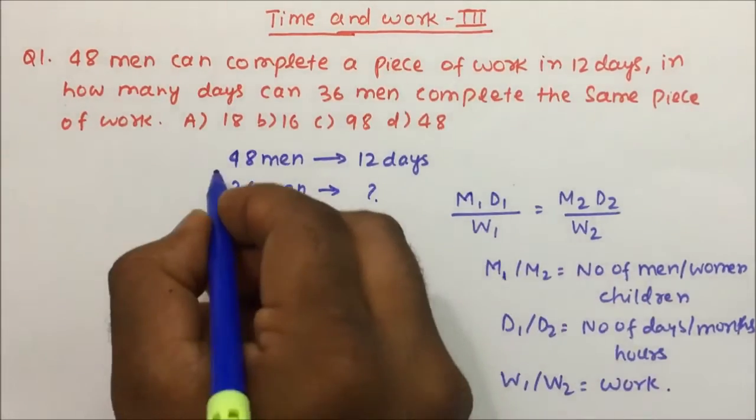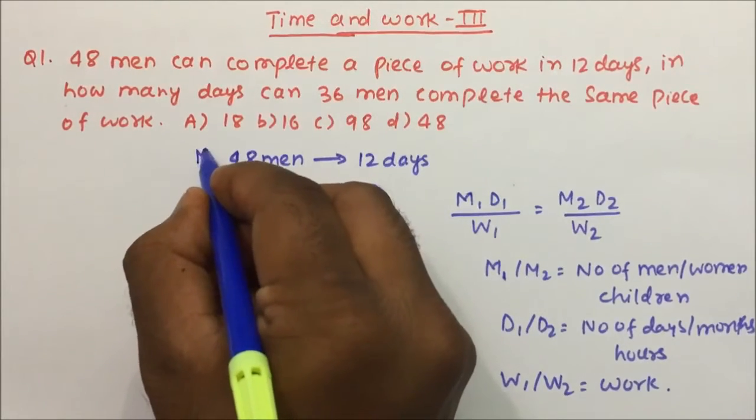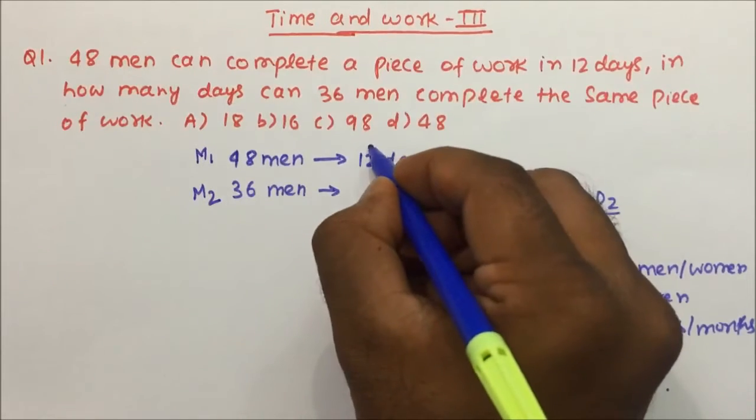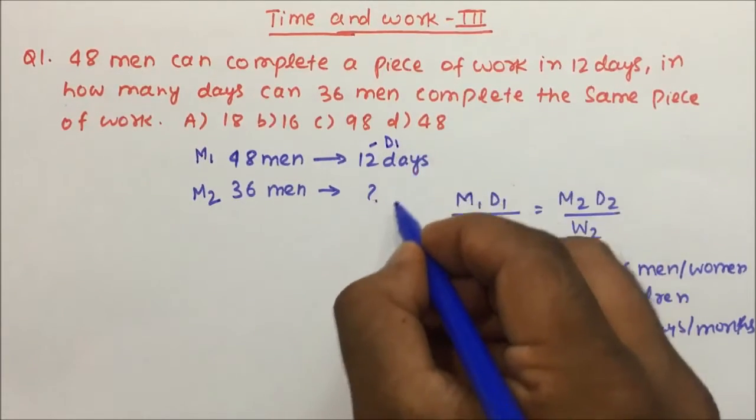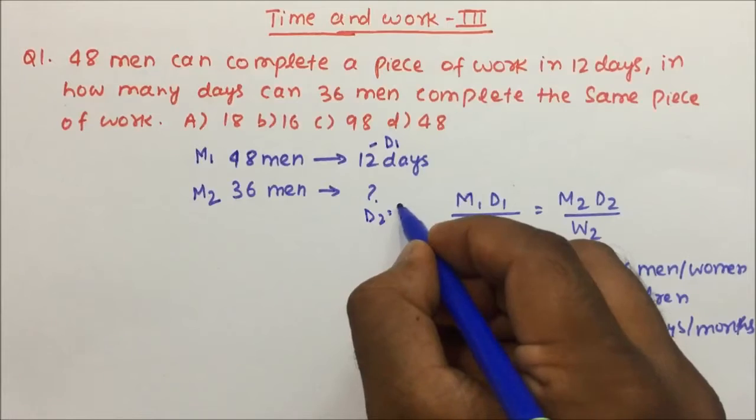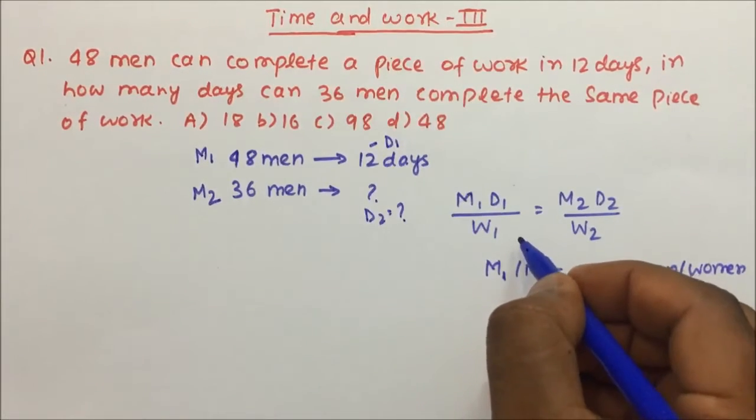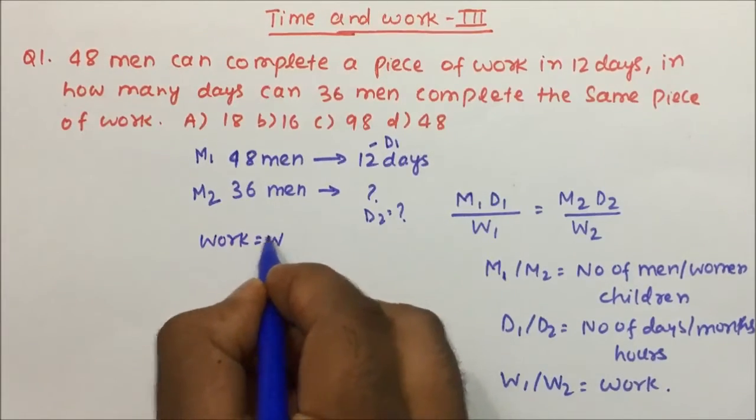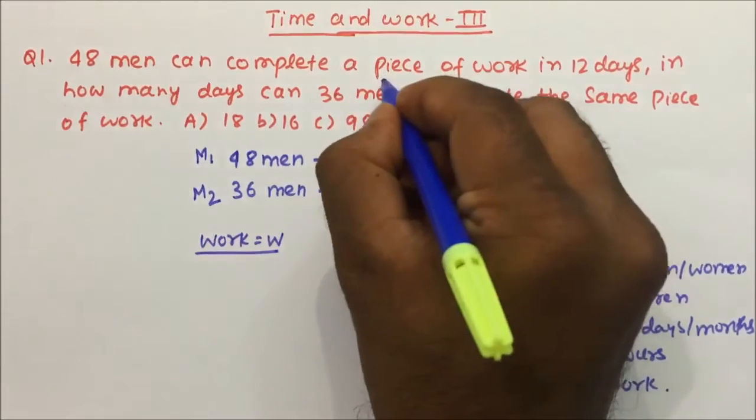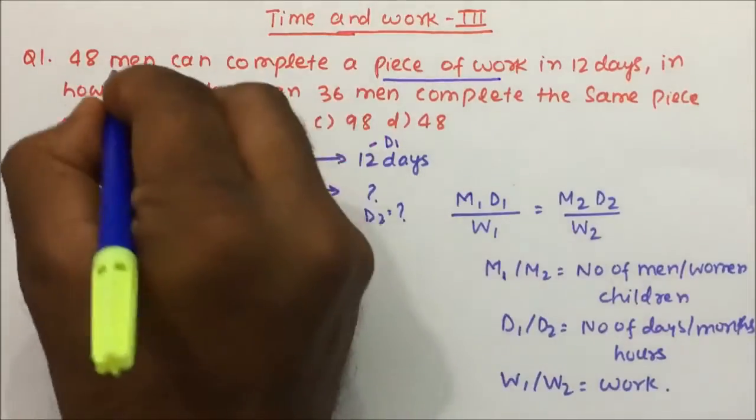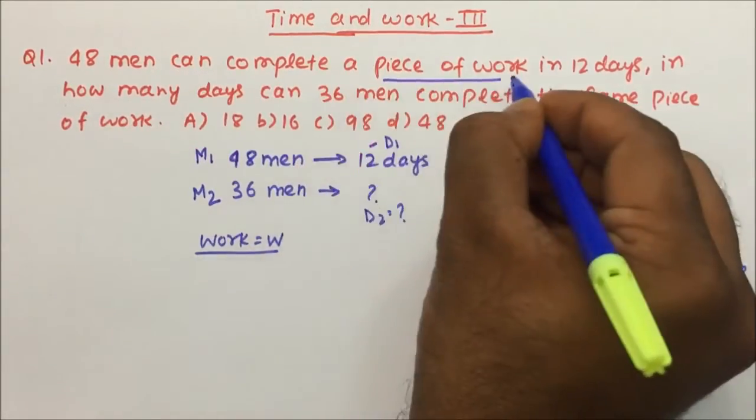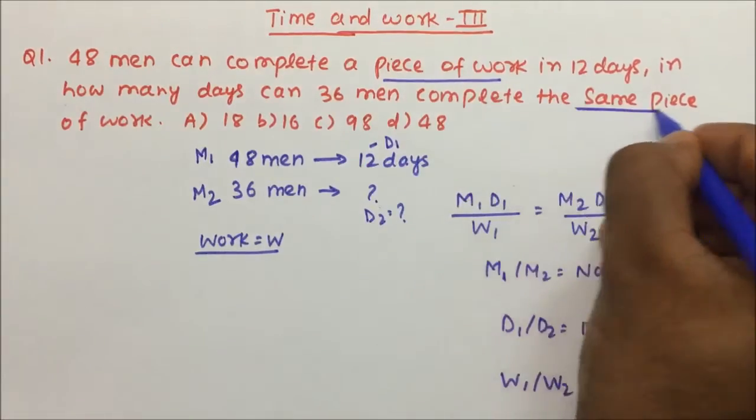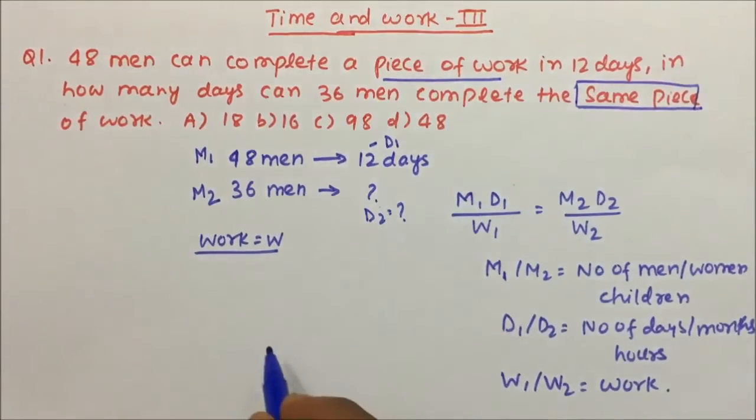Now, what is M1 here? M1 is 48 and M2 is 36. D1 is 12 and D2 we have to calculate. What about work? Let's say work is W. They are talking about the same piece of work, so suppose work is W.